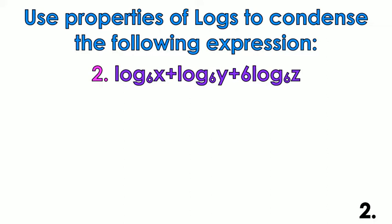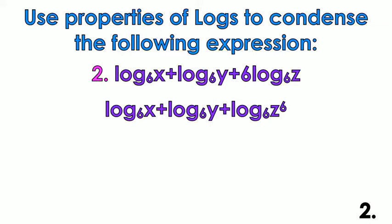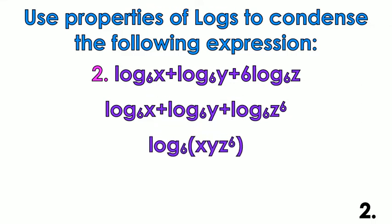Example two: I have log base 6 of x plus log base 6 of y plus 6 log base 6 of z. First we deal with the power rule — that coefficient 6 is going to become an exponent of z. Now I can deal with the pluses, which are going to become multiplication. The product rule tells us that addition turns into multiplication.